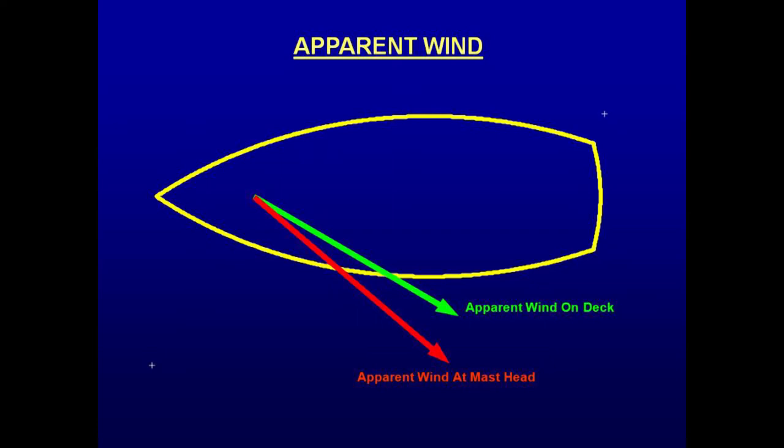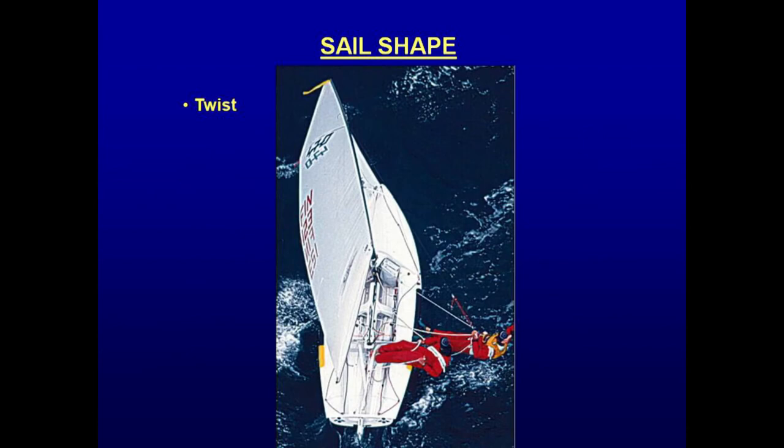In order to make sure that all parts of the sail are operating at the same angle of attack, the sail needs a small amount of twist, as shown in this photograph of a 470 dinghy.